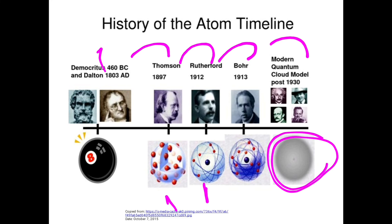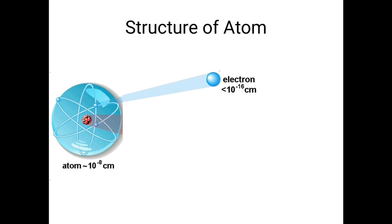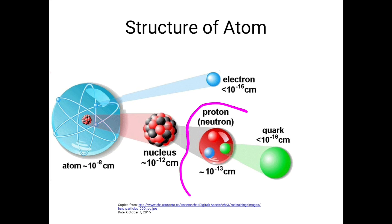The structure of the atom: the nucleus contains protons and neutrons. The diameter of the proton is 10 raised to the power minus 13 centimeters. These diameters can appear in MCQs — the electron has its own diameter, the proton has its own diameter, and the atom's diameter is 10 raised to the power minus 8 centimeters.